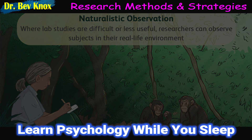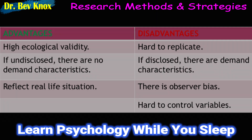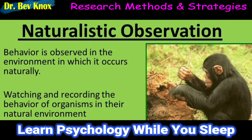Although the advantage of naturalistic observation is obvious — we get a sample of what people do in their natural habitat — there is also an important drawback: the inability to control any of the factors of interest. Naturalistic observation is a research method that records behavior in natural environments. These observations can range from watching chimpanzees in a jungle to videotaping and analyzing parent-child interactions in different cultures.